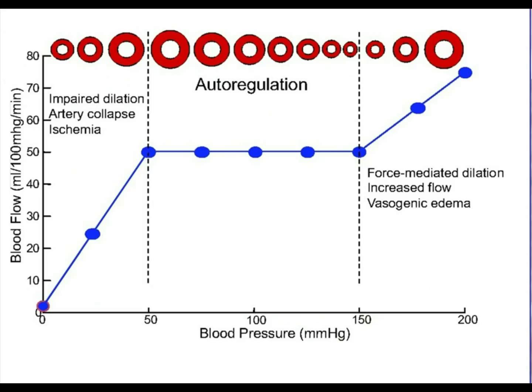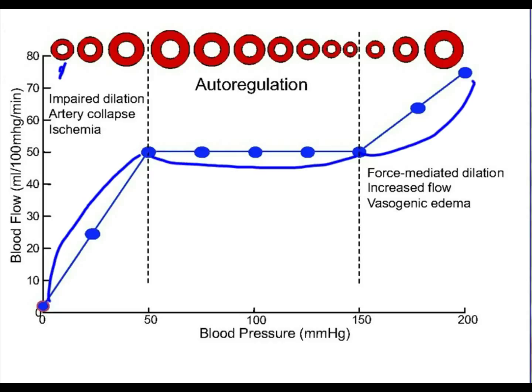Looking at the basic autoregulatory curve again: the outer portions are passive, and the middle portion is where we have autoregulation. Looking at the vessel, as we start increasing the pressure, the vessel initially dilates passively — increasing volume and radius due to pressure. But over the autoregulatory period, even though pressure is increasing, the radius goes down because the vessel responds to that increased pressure and flow by constricting to keep flow constant. Then we reach a point where the vessel can no longer autoregulate and it is passively dilating again.